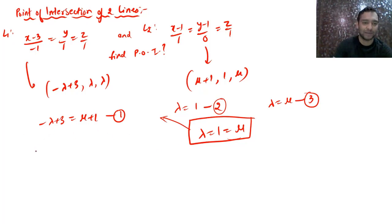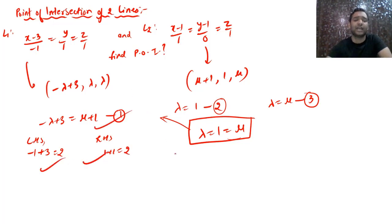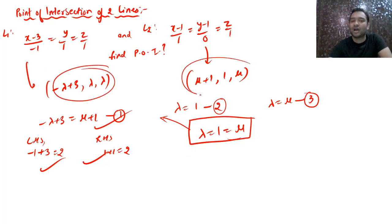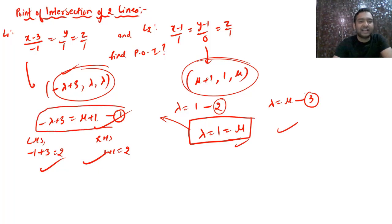Substituting λ = 1: LHS = −1+3 = 2, RHS = 1+1 = 2. Since all three equations are satisfied, the lines intersect. The point of intersection is obtained by substituting λ into line 1's general point. If the values didn't satisfy equation 1, the lines would be skew lines.